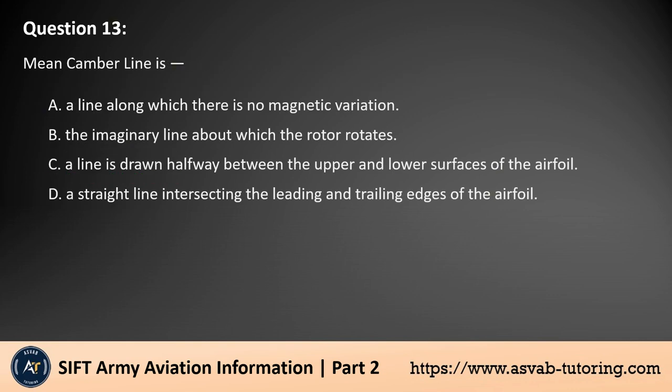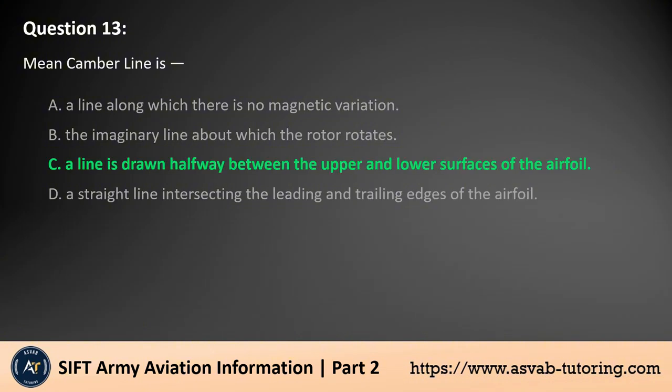Question 13. Mean camber line is: A. A line along which there is no magnetic variation. B. The imaginary line about which the rotor rotates. C. A line drawn halfway between the upper and lower surfaces of the airfoil. D. A straight line intersecting the leading and trailing edges of the airfoil. The answer is C. The mean camber line is a line drawn halfway between the upper and lower surfaces of the airfoil. This line represents the average curvature of the airfoil and is crucial for analyzing lift characteristics. It helps in understanding how the airfoil generates lift as air flows over it.